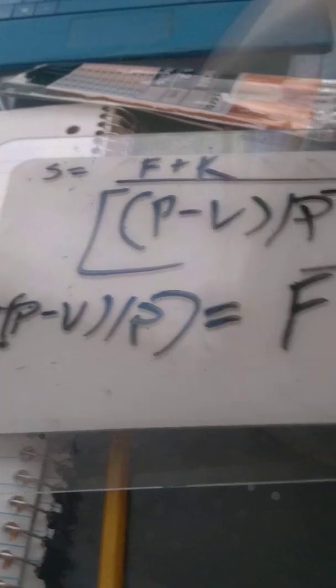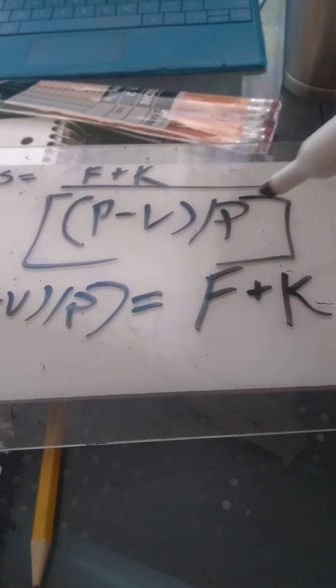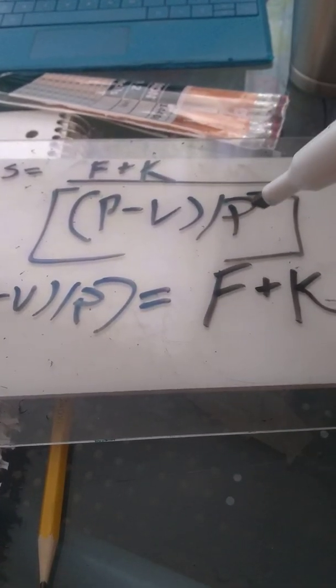Anyway, we've got sales equal to fixed cost plus capital divided by the contribution margin ratio: price minus the variable cost divided by p.